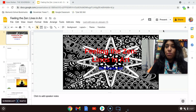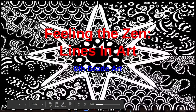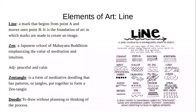The title of this is Feeling the Zen, Lines in Art. We're going to be using doodles and line drawings in order to make something really cool. Elements of art — we are going over line, and there are remarkable amounts of lines that you can use in art. A line is simply a mark that begins from point A and moves on to point B. So it can be a straight line, a vertical line, wavy, scribbly, curly, curved, spiraled — whatever you want to make it. It still starts from one point and ends at another.